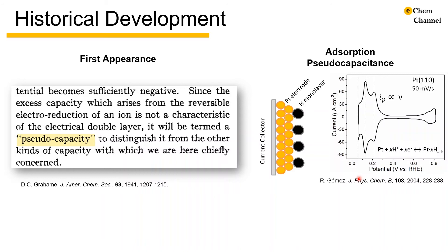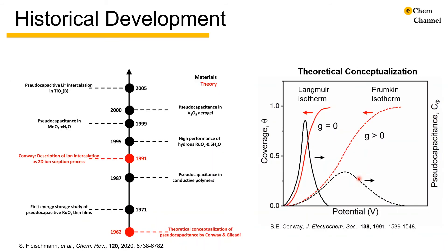This term was later used by Conway and co-workers to describe current due to ion adsorption, like proton adsorption on platinum surfaces and other underpotential deposition of metal ions. This phenomenon may be termed as adsorption pseudocapacitance.